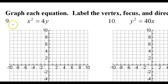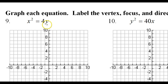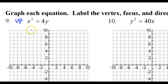Looking at number nine, we can see that the x is squared. That means this is either up or down. Because everything is positive, we know that this is going to be an upward facing parabola.